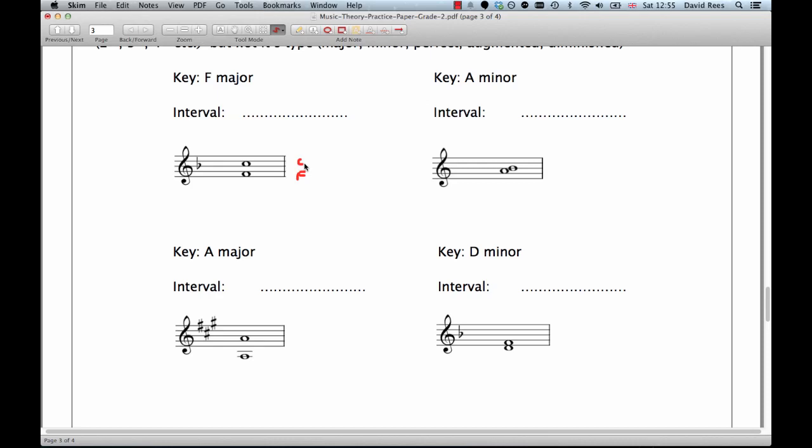Well, if we count through them, we go F, G, A, B, C. So that's five steps between F and C, which means that in this case, we're dealing with a fifth.